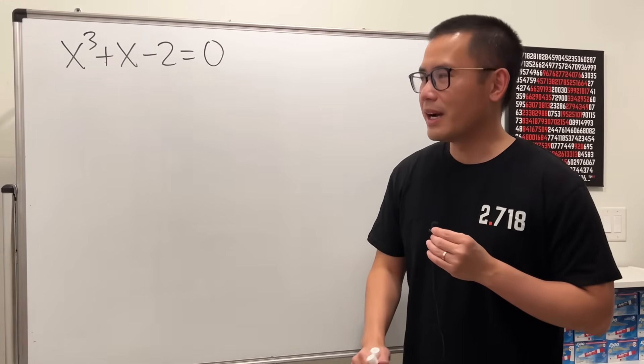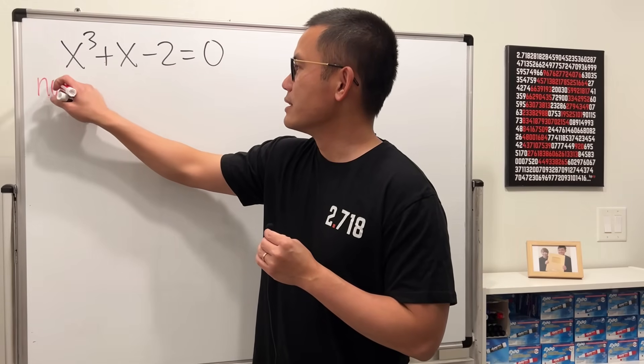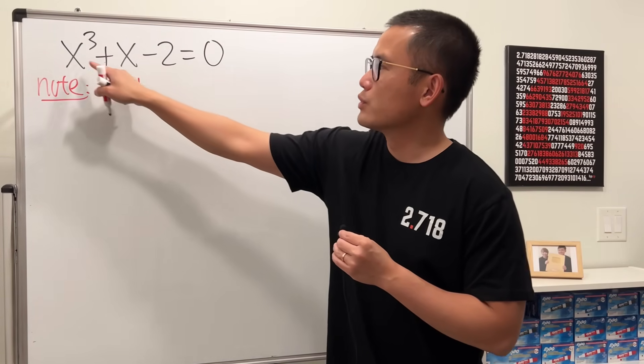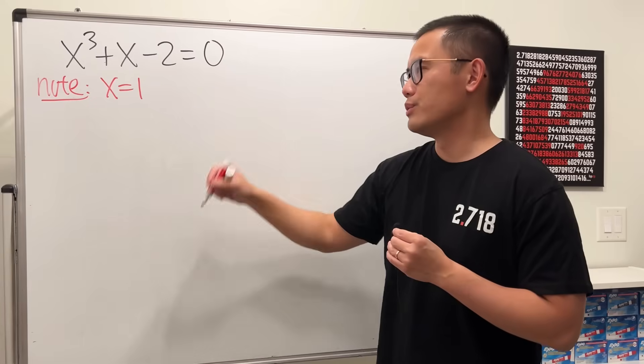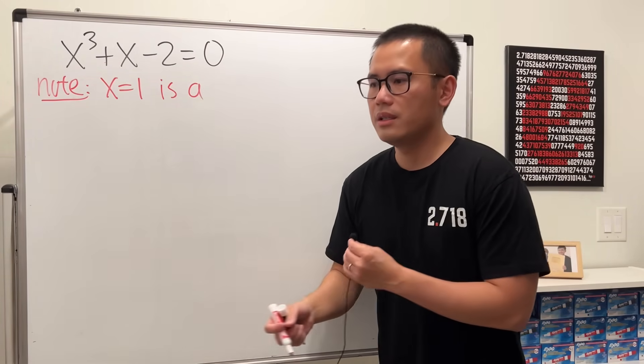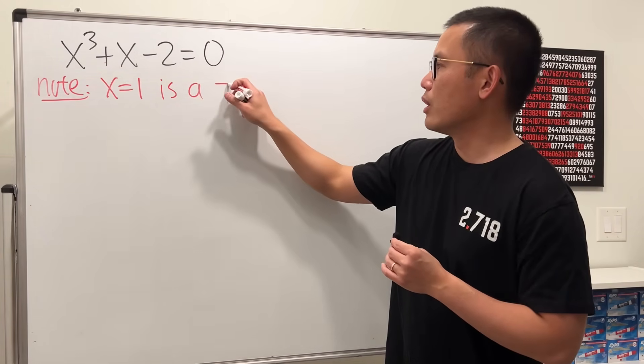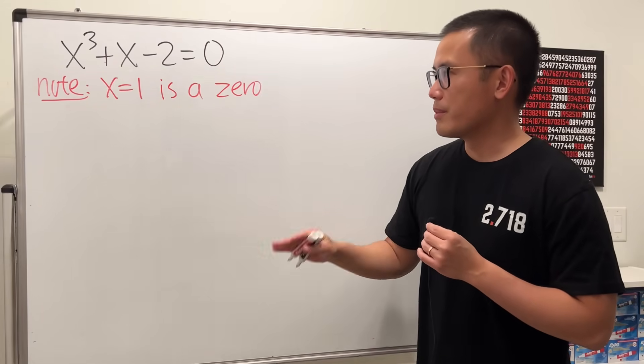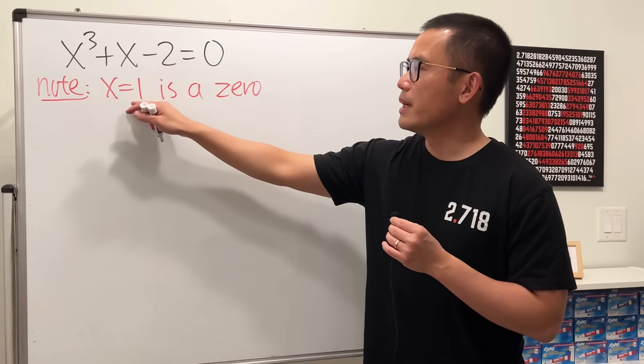What we can do first though, we can easily see an answer right here. Right away we can say that note, x equals 1, because 1 plus 1 minus 2 equals zero. So this is a solution, it's a root, it's a zero. All three things mean the same, but let me just put it as x equals 1 is a zero.